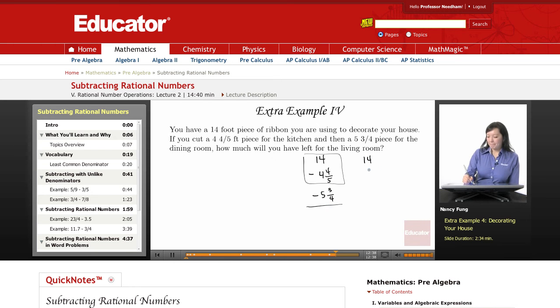So 14 minus 4 and 4 fifths. I'm going to borrow from the 14, leaving 13 feet. And the one that I borrowed, I'm going to make into 5 over 5. I've chosen 5 over 5 because the denominator on the second fraction is a 5 and this will make it easier to work with.